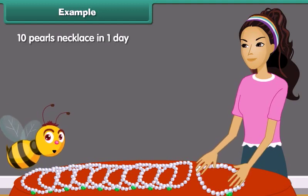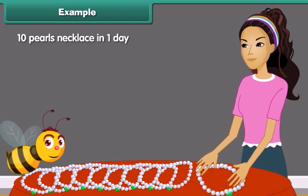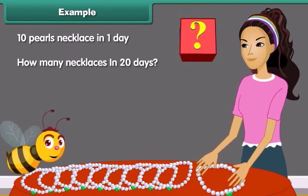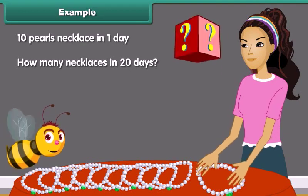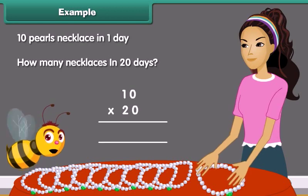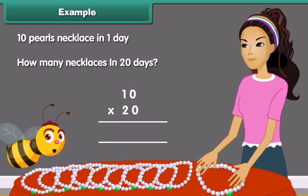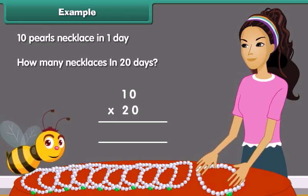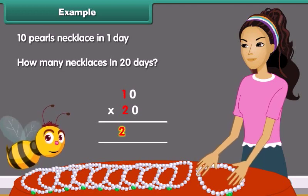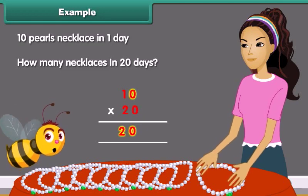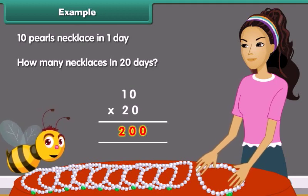Dinah makes 10 pearl necklaces in one day. In 20 days, she will make how many necklaces? We need to multiply 10 with 20. Step 1: Multiply the numerals without zeros — 2 multiplied by 1 is equal to 2. Step 2: Count and add the number of zeros to the right side of the answer. In this case, we have two zeros. Thus, the final answer becomes 200.